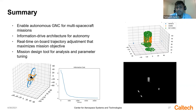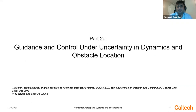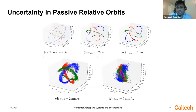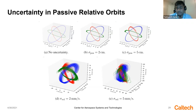So far I've assumed perfect knowledge of initial state, terminal state, and dynamics. However, for passive relative orbits, if there is uncertainty in initial position and velocity — especially uncertainty in thruster actuation — it can affect proximity operations when multiple spacecraft are actively maneuvering to achieve information. To handle this problem, we formulate a chance-constrained stochastic optimal control problem.